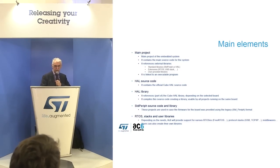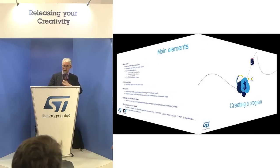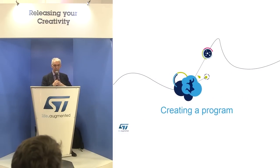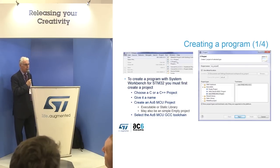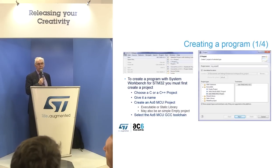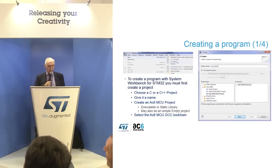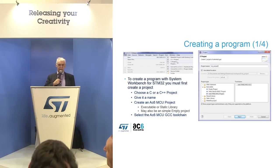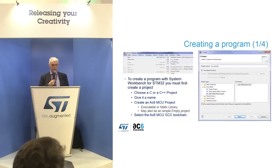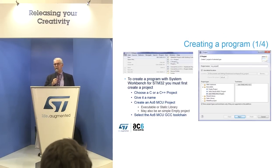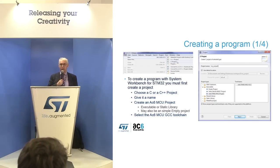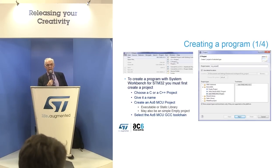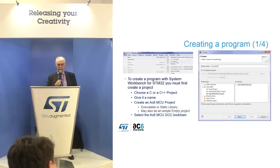I will show you quickly how to create a program and then debug it — it is very simple. When you want to start working with System Workbench for STM32, you first create a project: a standard C/C++ project for Eclipse. Give it a name, and create it as an AC6 MCU project, where you can create either an executable project or a library project. If you have your own library to integrate, you can create it as a library and reference it from your project.